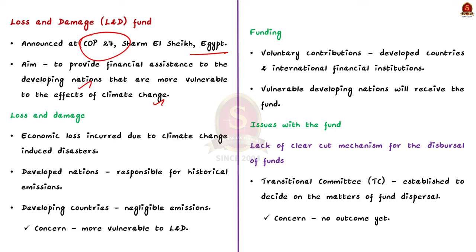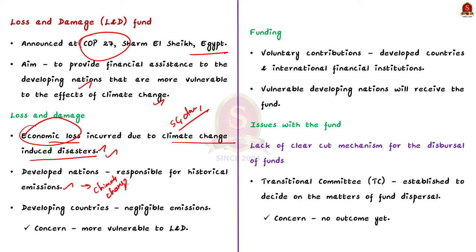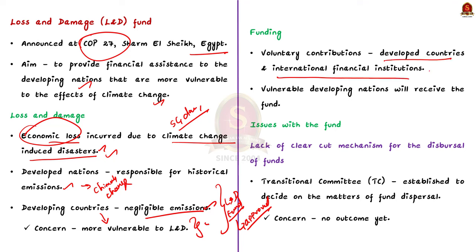What does the phrase 'loss and damage' mean? Loss and damage refers to the costs being incurred from climate change-fueled extreme weather like sea level rise, droughts, etc. — essentially the economic loss caused due to climate change-induced disasters. Note that developed countries are primarily responsible for historical greenhouse gas emissions, which polluted the environment and resulted in climate change. On the other hand, developing countries have made negligible emissions historically but are now the most vulnerable to loss and damage fueled by extreme climatic events.